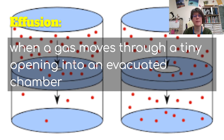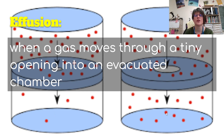Something you may not be familiar with, which is very similar to diffusion, is effusion. This is when a gas moves through a tiny opening into an evacuated chamber. Here you can see two different chambers with two different openings. A smaller opening allows fewer particles to go through; a larger opening allows more particles. Think of when you spring a leak in a tire — that would be effusion.